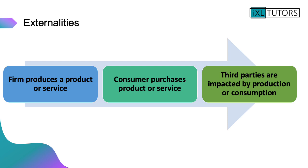So we're going to have a look at externalities. The process we've looked at so far has only really considered firms and consumers — how firms produce a product or service and consumers purchase it. What we haven't considered is the impacts on third parties. Whenever a good or service is consumed or produced, there will be impacts on third parties, and that's what we're going to look at.